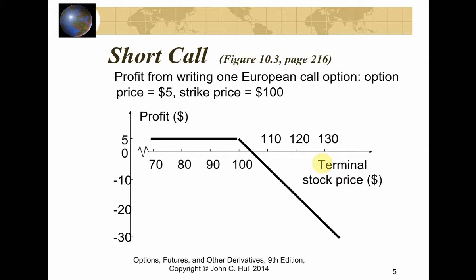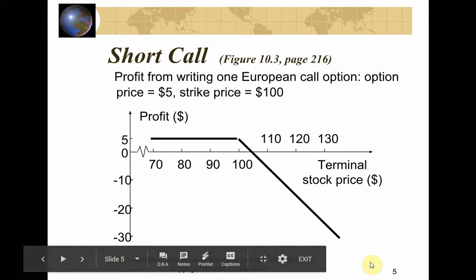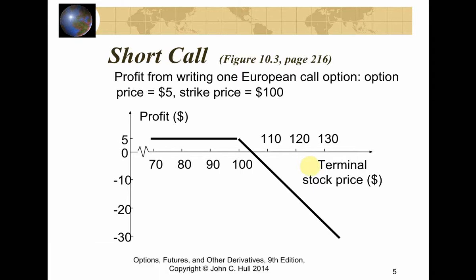These are expiration diagrams — profit diagrams, not payoff diagrams — because you're incorporating the impact of the premium. These are called hockey stick diagrams. In this case it's a short call because as the underlying price closes higher and higher above the strike price of 100, you are losing more and more money. A short call will behave like this — if the market price keeps rising above the strike, you're losing money as you're short the position.